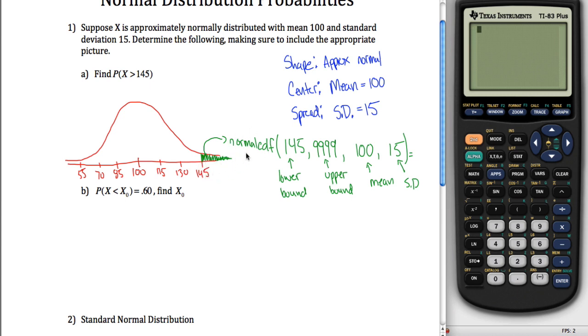So how do you do this on your calculator? We need to find this normal CDF function, and that's hidden under the distribution menu, which is above variables. I hit second, then variables, and it brings me into my distribution list. I want the second one, normal CDF. Copy all your inputs: from 145 all the way up to some big number with the mean of 100 and standard deviation of 15. If I hit enter, it'll give me that probability, 0.0013 or 0.135%. Not a whole lot of area. If your mean is 100 and standard deviation is 15, it's pretty unlikely you're going to be greater than 145.